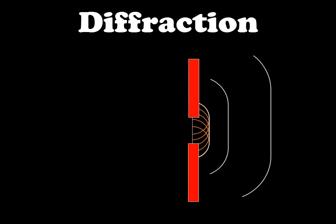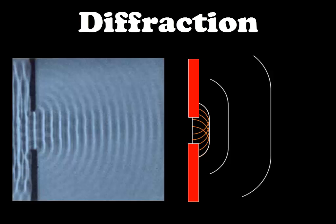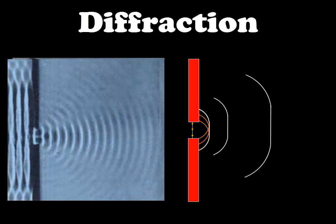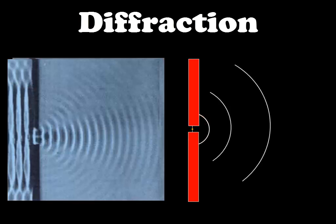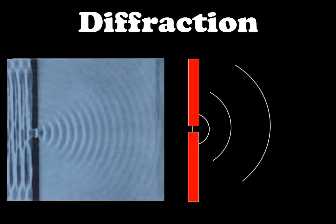And Huygens explained that this bending effect was due to the fact that in a small opening, only a few Huygens sources survive. And as the opening narrows and approaches zero, only one Huygens source would survive and give you a perfect spherical wave, giving you perfect diffraction.